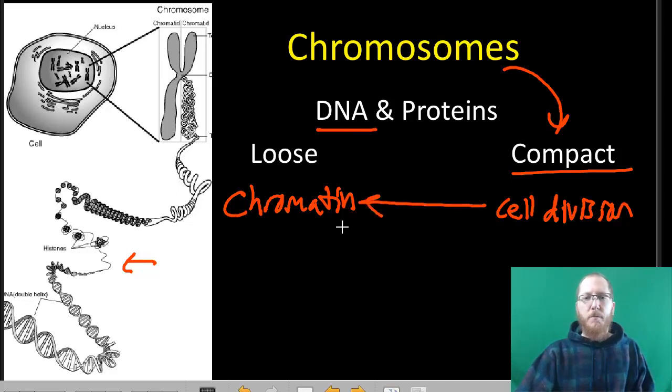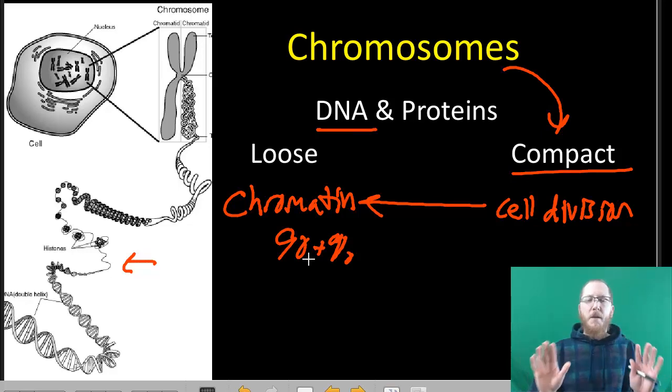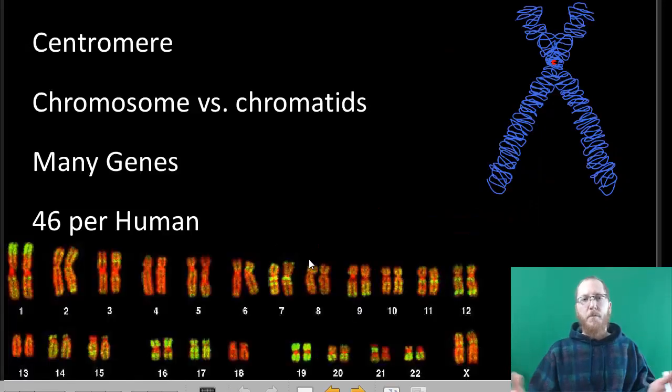Because when it's a chromosome, it's so tightly packed that you cannot use it to do normal functions. You're not going to typically be doing transcription, translation. So you're going to briefly move it, divide the cell, and then let it go back to being chromatin. This is our default, is chromatin. You know, 90-some percent of the time, it's going to be chromatin. So just keep that in mind. We'll talk about chromosomes a lot, but that's not the default state of DNA. That's chromatin.